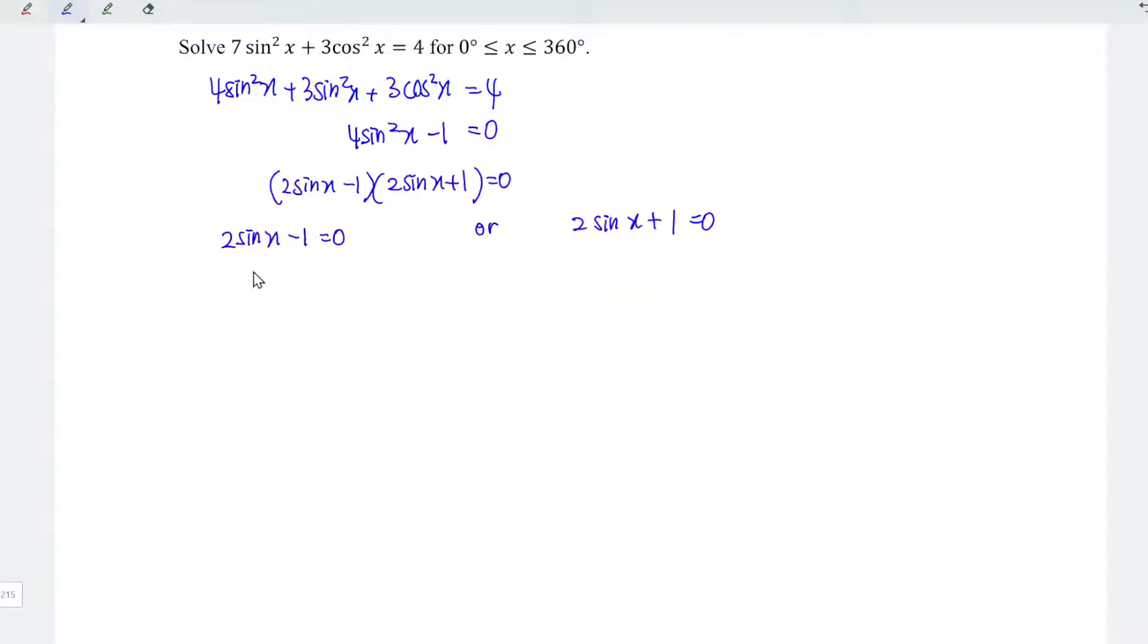Let's solve for the first equation, which means that we should have sin x is equal to 1 over 2. So x is equal to arc sin 1 over 2, and this is equal to 30 degrees.